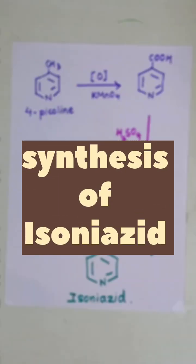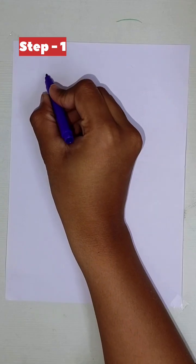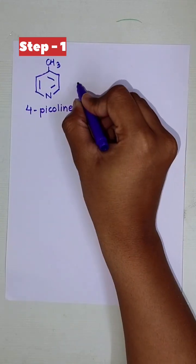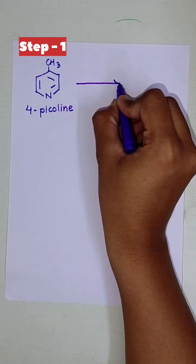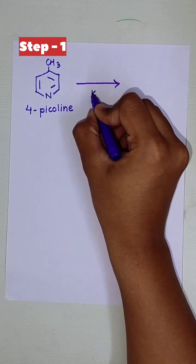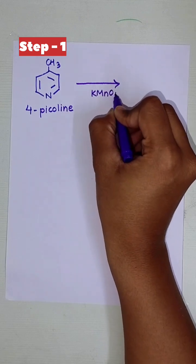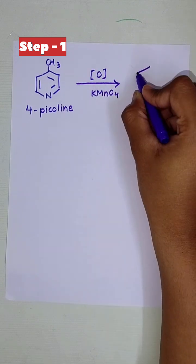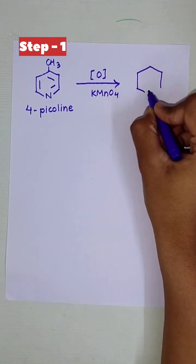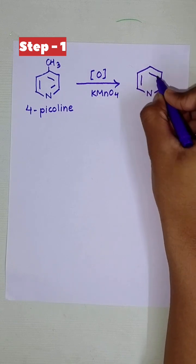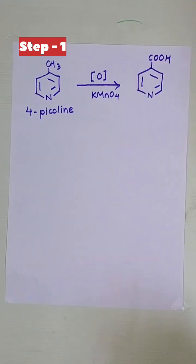Let's learn its synthesis. Step 1: 4-picoline reacts with potassium permanganate to form a derivative of carboxylic acid of pyridine.